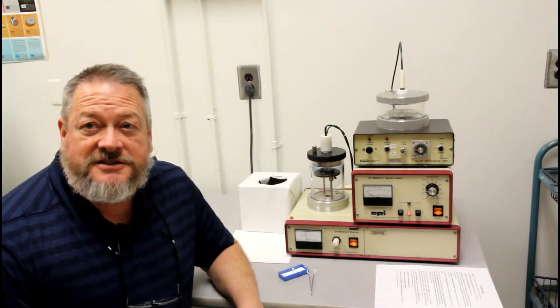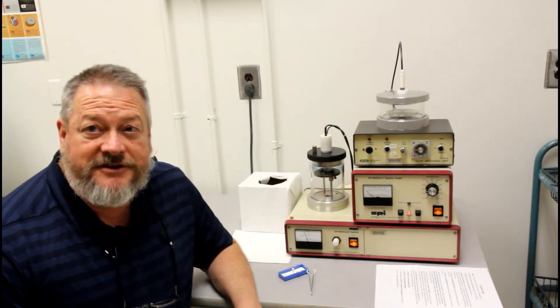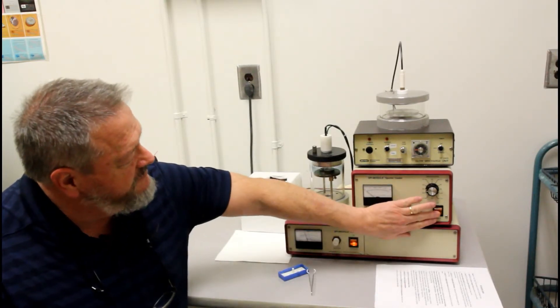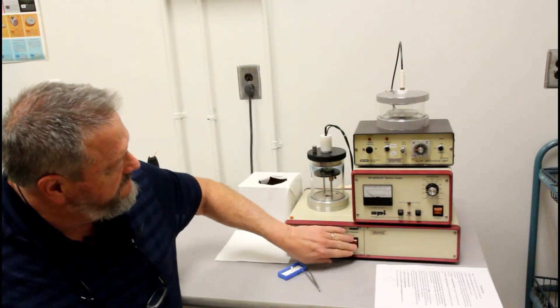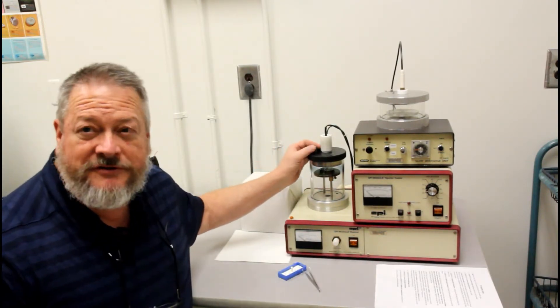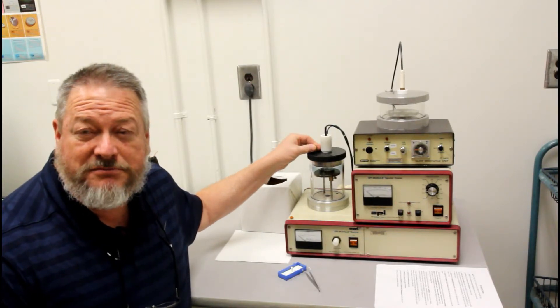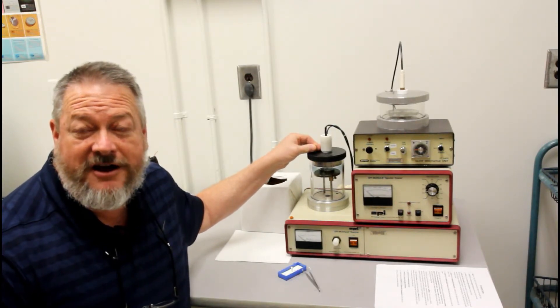Once that's finished, it'll shut itself off. Then we just need to turn everything off and vent the chamber. Now you don't want to vent it too quickly. If you do, you might blow your sample off of the stub.